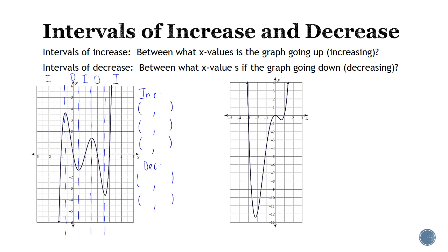Because these graphs won't give us nice perfect numbers, we just get as close as we can. The first interval of increase starts at negative infinity and goes to approximately negative one half. The next increase interval goes from negative one half to positive one half. Then the third increase interval starts at positive one half and goes to one and a half. The decrease intervals go from one and a half to two and a half, and then two and a half to positive infinity.